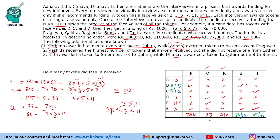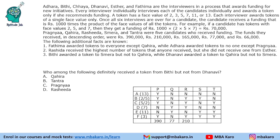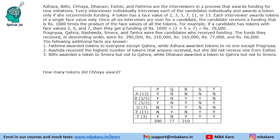Now the questions. Q1: How many tokens did Kweera receive? Kweera received 2 tokens — one from Dhanvi (7) and one from Esther (11). Q2: Who definitely received a token from Bithi but not from Dhanvi? Prajna satisfies this. Q3: How many tokens did Chaya award? Chaya awarded 1, 2 or 3 tokens. Q4: How many tokens did Smera receive? We cannot find the exact funding but she definitely received 3 tokens.